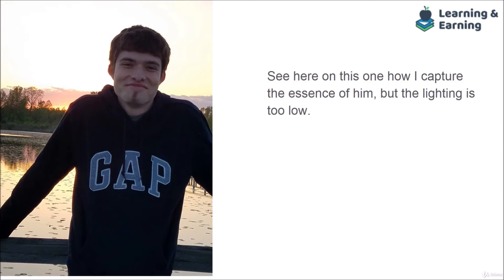Here are a couple other do-not-dos. Do not have the person too much in shadow unless it's strategic. Here, Adam is entirely in shadow — his face is not very well lit, neither is his sweatshirt, but the background is. I wanted to show you this because look at how I captured the essence of him — his silly, goofy, happy personality. But the lighting is too low, so it's an interesting dichotomy. I'd recommend editing it post to make it lighter, or get an external flash, which we'll talk about more in another lecture.